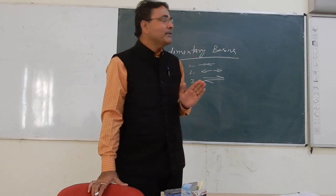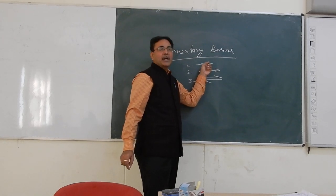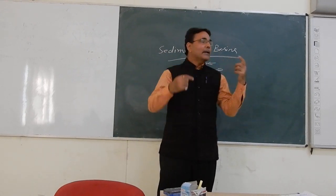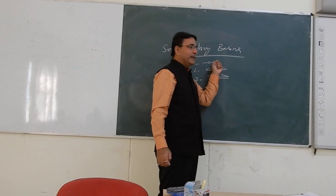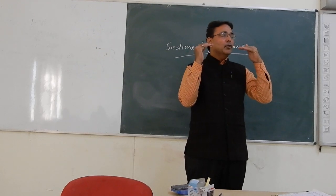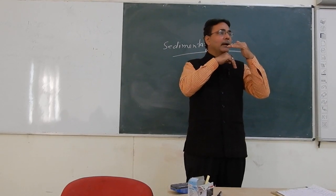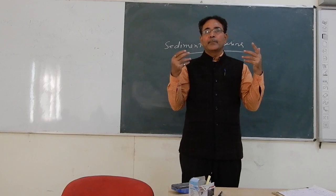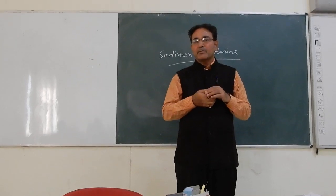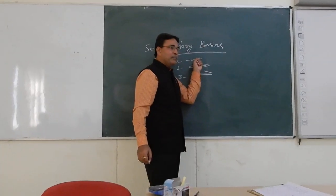We have already discussed sedimentary basins formed by convergent plate movement — when one plate is subducted. There are two situations: when one plate is oceanic and another is continental, the oceanic plate subducts. That is the soft collision. A number of sedimentary basins are formed: the trench, the back arc basin, fore arc basin, and retro arc basin.